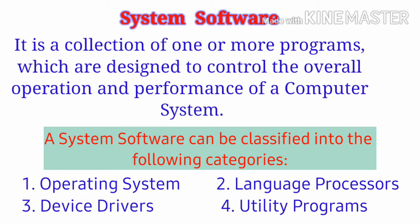System Software is a collection of one or more programs which are designed to control the overall operation and performance of a computer system. System software can be classified into the following categories: Operating System, Language Processor, Device Drivers, and Utility Programs.